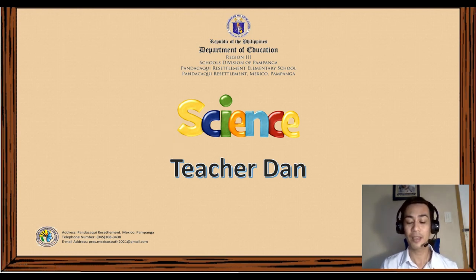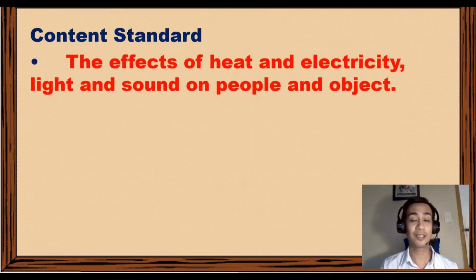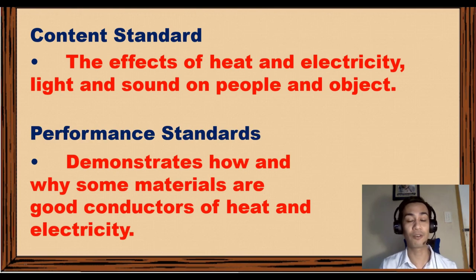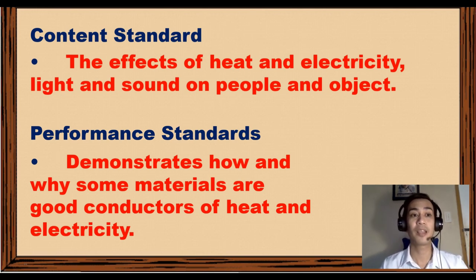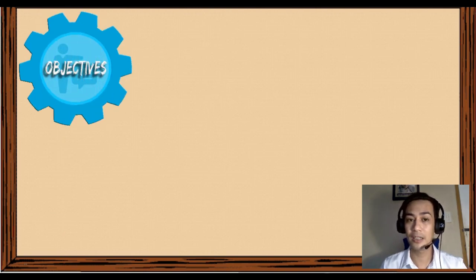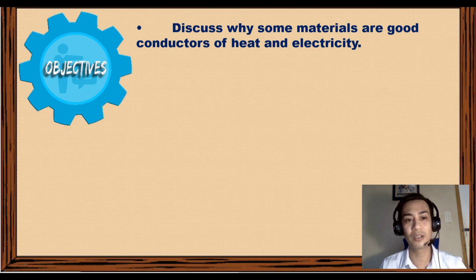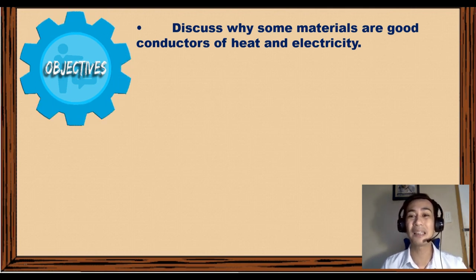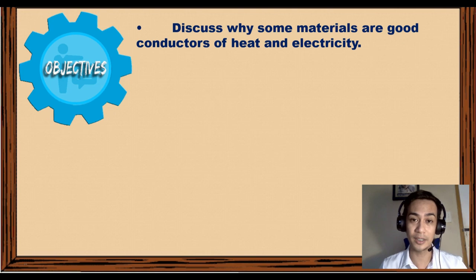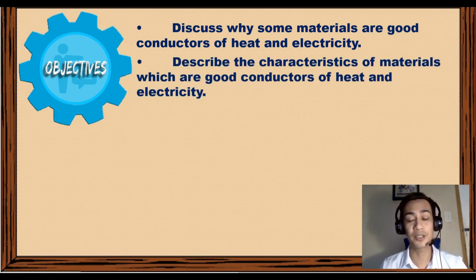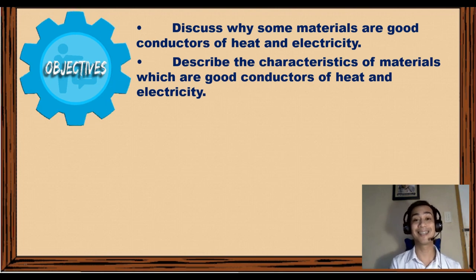Let's start with the content standard: the effects of heat and electricity, lights and sounds on people and objects. The performance standard is to demonstrate how and why some materials are good conductors of heat and electricity. Our objectives are: first, discuss why some materials are good conductors of heat and electricity, and talk about the characteristics of good conductors.